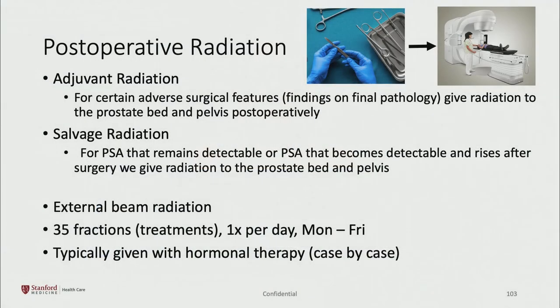Occasionally after surgery we use radiation if pathology shows high-risk features for recurrence, or if the PSA starts to rise after surgery. This is called adjuvant radiation if used after surgery with a normal PSA, and salvage radiation if the PSA is detectable or rising after surgery. In this setting we can only give external radiation — we cannot give internal radiation because there's no prostate anymore. This is typically a seven-week course of 35 treatments, generally given with hormonal therapy on a case-by-case basis.